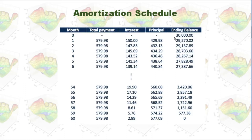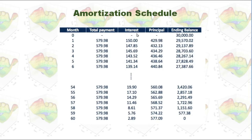As we pay it down, the ending balance will be reduced until it reaches zero. Every month, we will pay the same amount according to this amortization schedule. Within this total payment, there are two components: one is for interest, and another one is for principal. At the beginning, the interest will be $150, and as the ending balance is reduced, the interest amount will be reduced too. And in the meantime, the principal portion of this payment will increase.